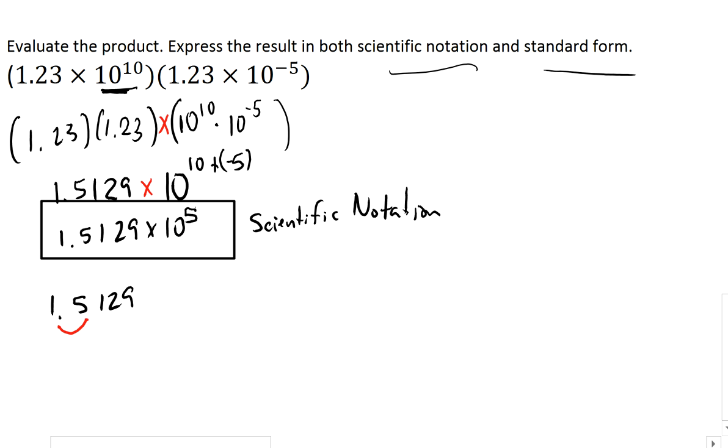So 1, 2, 3, 4, 5. So I'm simply going to add a 0 here. And my result in standard numerical form is 1, 5, 1, 2, 9, 0, which is 151,290. And that's my answer in the standard numerical form. Standard form. So that's it.